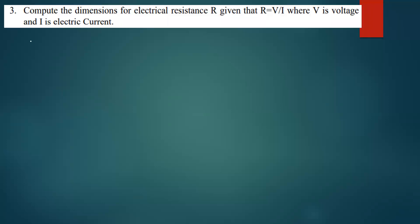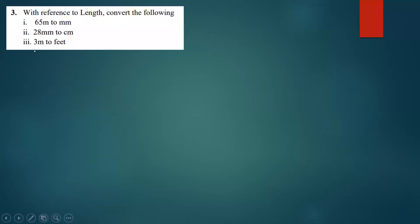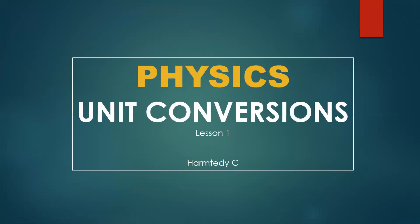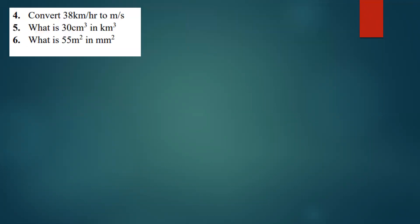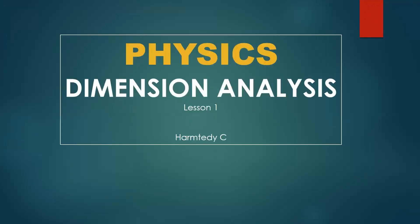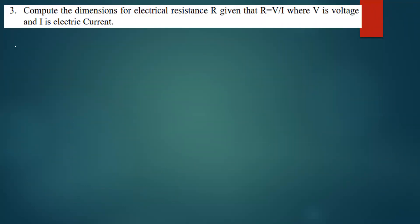The question is asking us to compute the dimensions for electrical resistance, given that the resistance is V over I. We're going to introduce power because we know the dimensions for current, and we've been asked to find the dimensions for the resistance. The only thing we can replace is the voltage.